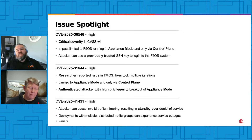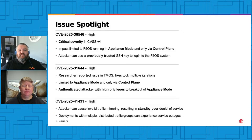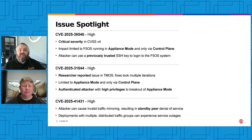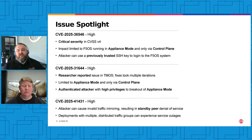We have three issues in this QSN that we want to spotlight. The first is CVE-2025-36546. This is a high — also a critical when scored in CVSS version 4. The impact is limited to F5OS running in appliance mode and only via the control plane. You can lock down your management ports, and a lot of customers don't use appliance mode, so if you're not in appliance mode, you're not affected. An attacker can use a previously trusted SSH key to log into the F5OS system. If you had trusted SSH keys before going to appliance mode, they can still be used — so you can revoke those keys prior to going to appliance mode to mitigate the issue, or move to a fixed version.